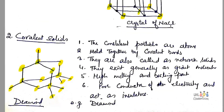The second type of solids are covalent solids. The constituent particles are atoms, and the solids are held together by covalent bonds. These solids are also called network solids. They generally exist as giant molecules — they are large molecules, not small ones.